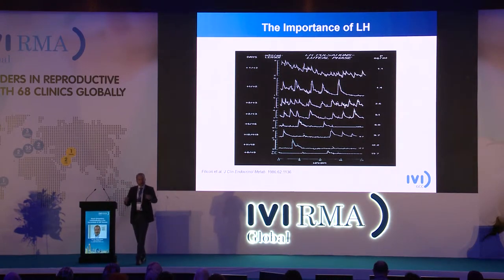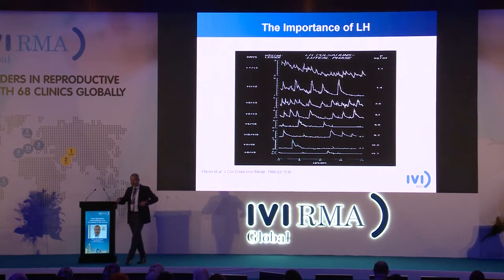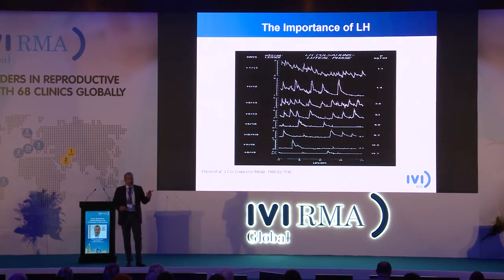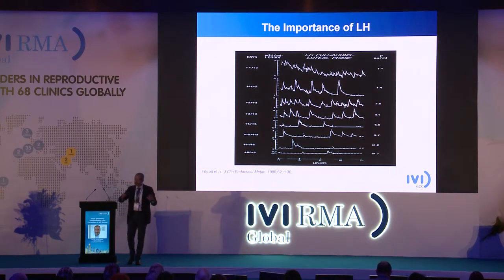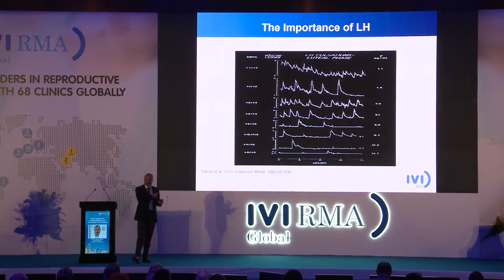If LH is completely suppressed, the patient will start bleeding. On the other side, if the patient becomes pregnant, hCG produced by the trophoblast will supplement this lack of LH.